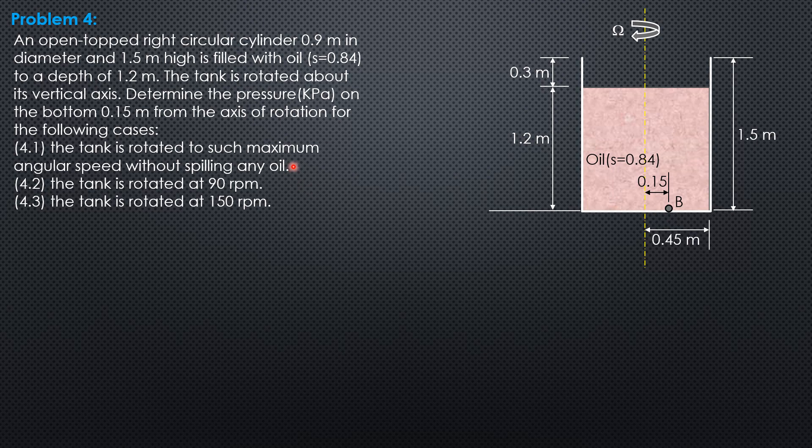For the first question, the tank is rotated to such maximum angular speed without spilling any oil. The maximum height of the parabolic surface without spilling any oil should be times 2 of 0.3, so 0.6 as shown in the figure. Then, the distance of B from that imaginary parabolic surface of zero pressure, because it is exposed to the atmosphere, is denoted by HB. Therefore, the pressure at B is gamma of oil times HB.